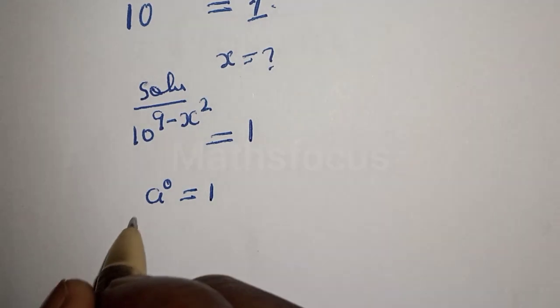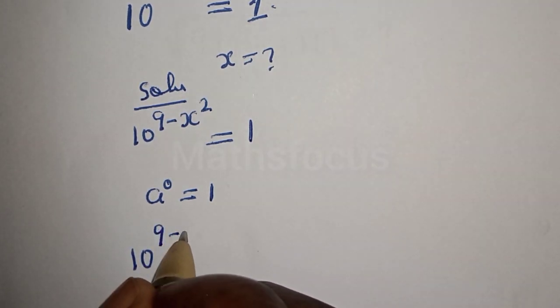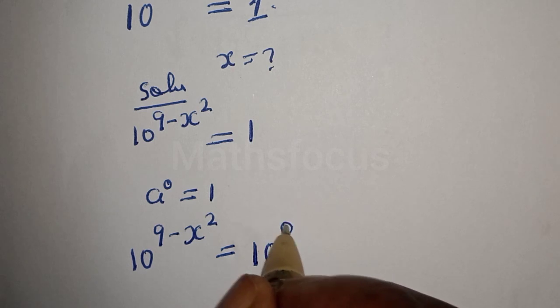So this can be written as 10 raised to power 9 minus x squared equals 1, which can be written as 10 raised to power 0.